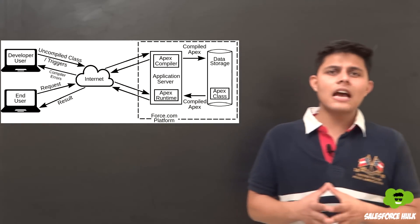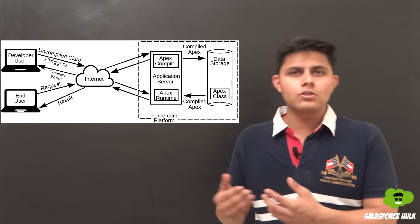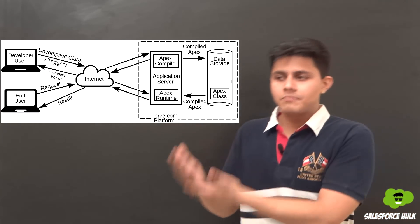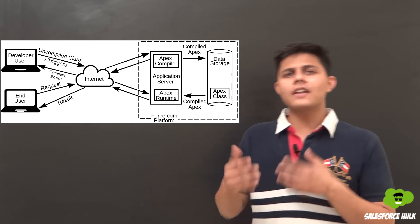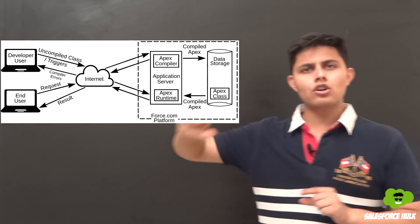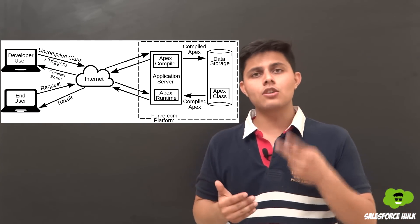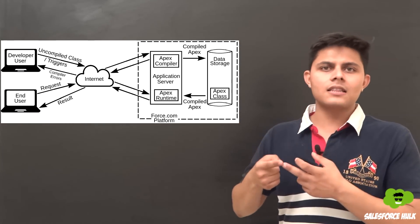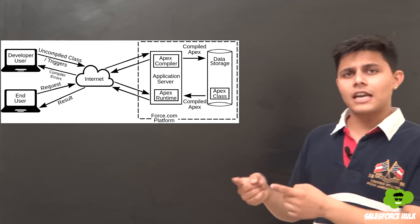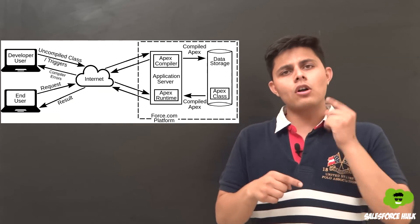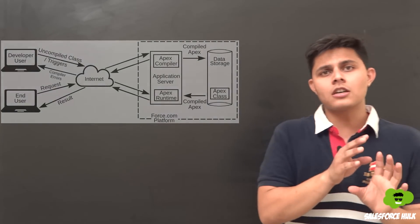Now let's talk about the end user action flow. When end users or business users invoke a particular Apex class or code, a request goes to the Force.com platform's application server, which again contains the Apex compiler and the Apex runtime. The request goes to the Apex runtime, which fetches the compiled Apex from data storage, executes it on the Force.com platform, and returns the result back to the end user.